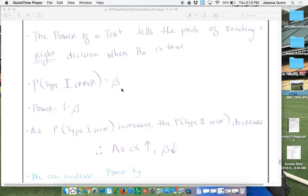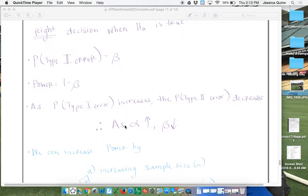So as your alpha level is increasing, as the probability of making a type 1 error increases, the probability of making a type 2 error decreases.